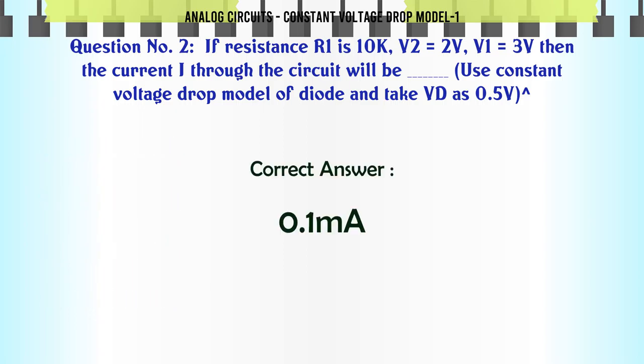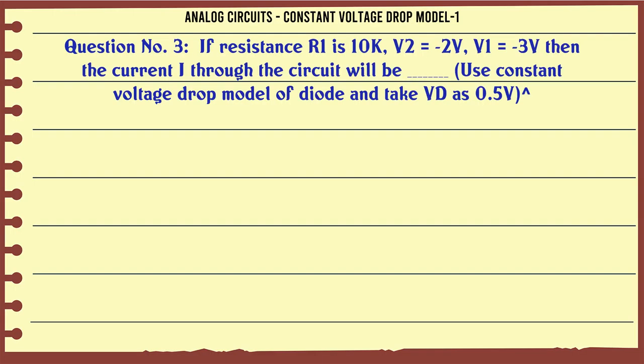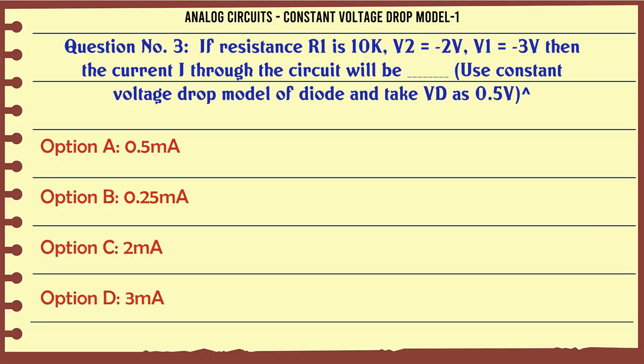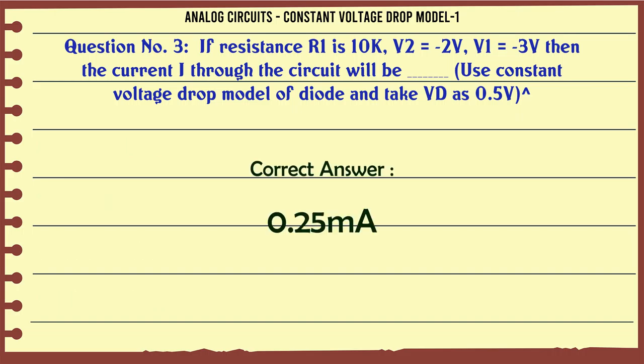The correct answer is 0.1mA. Next question: If resistance R1 is 10k, V2 = 2V, V1 = 3V, then the current I through the circuit — use constant voltage drop model of diode and take Vd as 0.5V. Options: A) 0.5mA, B) 0.25mA, C) 2mA, D) 3mA. The correct answer is 0.25mA.